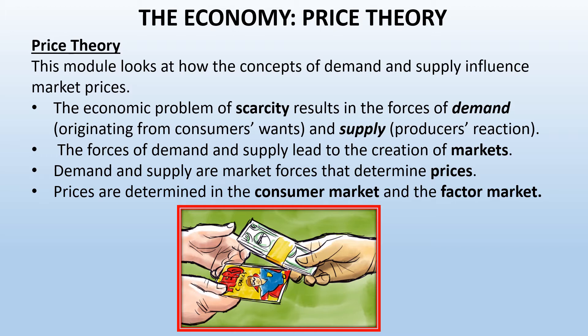Prices are determined by demand and supply — how much people want, how much they are willing to pay for something, that's demand, and how much suppliers are willing to supply at a certain price. Prices are determined in the consumer market and in the factor market. The consumer market is where we sell goods and services, and the factor market is where factors of production are sold — entrepreneurship, labor, natural resources, and capital.